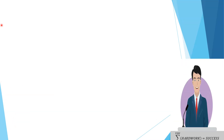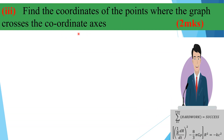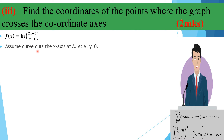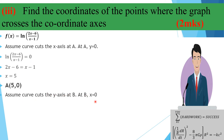Next, find the coordinates where the graph crosses the coordinate axes. For the x-axis, set y = 0, i.e. ln((2x-6)/(x-1)) = 0, and solving gives x = 5, so the point is (5, 0). For the y-axis, set x = 0, giving y = ln(6), so the point is (0, ln(6)).